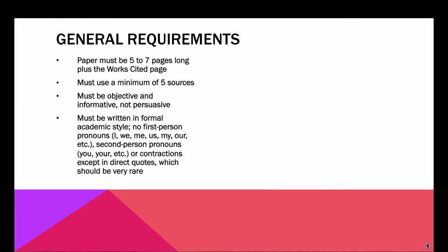The paper must be written in a formal academic style. No first person pronouns like I, we, me, us. No second person pronouns like you and yours. No contractions, except of course in direct quotes, and those should be very, very rare as we discussed when working on the first paper. You also need to avoid phrases like 'I think,' 'I believe,' 'I agree,' 'it seems to me,' anything like that.